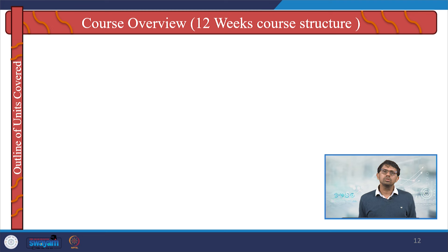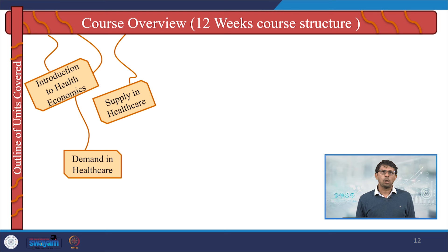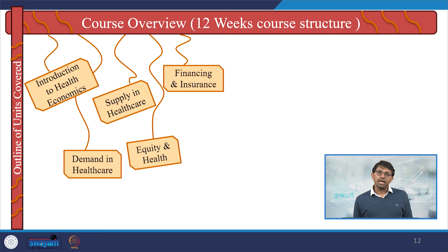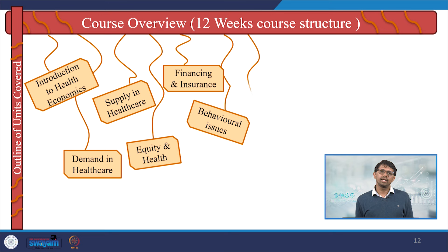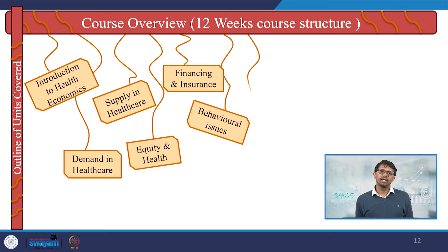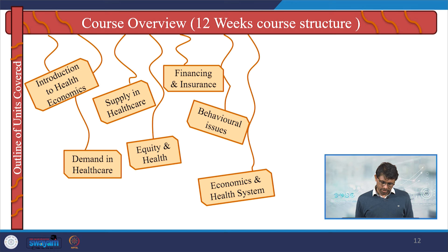This is a 12-week course with coverage of 60 plus lectures. Each lecture recording is around 30 minutes, sometimes up to 50 minutes, but largely 25 to 30 minutes. The units cover: introduction to health economics, demand and supply in healthcare, equity in health, financing, insurance, behavioral aspects of healthcare, and how human needs and behavioral aspects conflict with economic entities. The course also covers the economics of health systems.